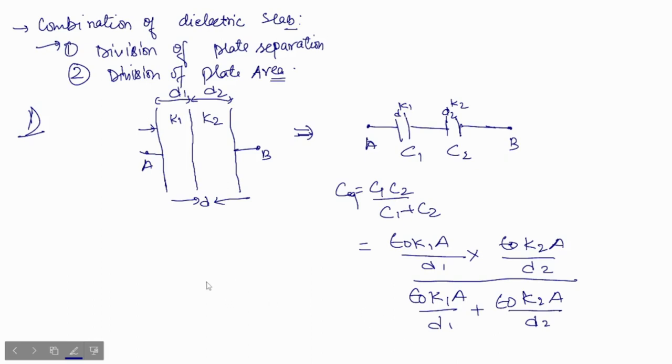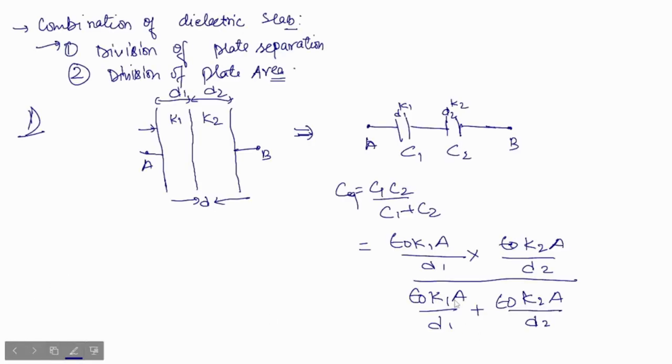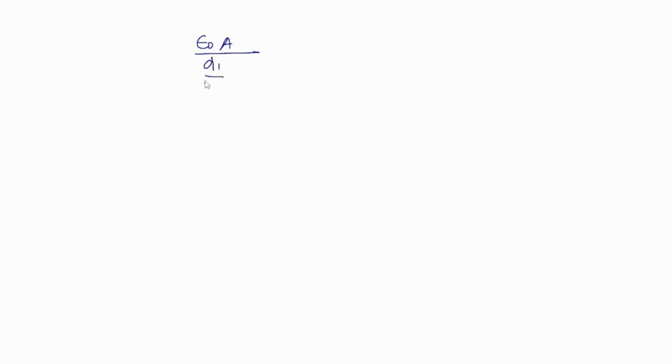If you take ε₀ × A common and cancel terms, the final result becomes: C_eq = ε₀ × A / (d1/k1 + d2/k2). This is the equivalent capacitance when the plate separation is divided into two regions with dielectric constants k1 and k2.